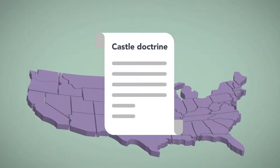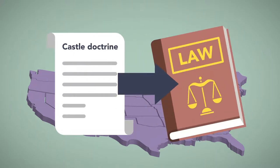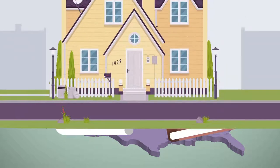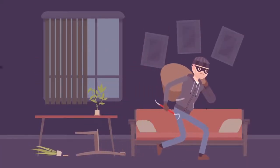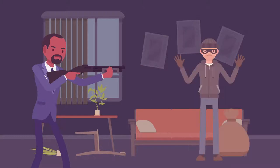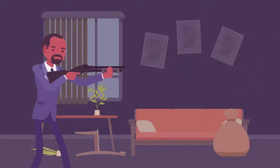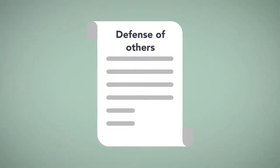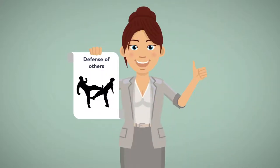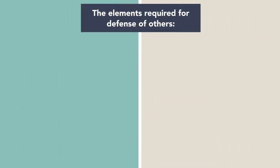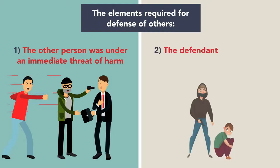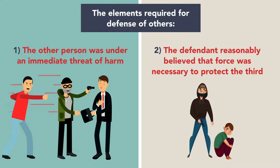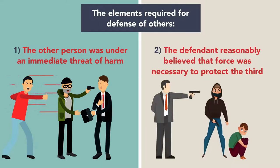Most states have incorporated the castle doctrine into law. Variations of the castle doctrine eliminate the duty to retreat from one's home before using deadly force, and or allow the use of deadly force against intruders, even when no deadly force is directly threatened by the intruder. Defense of others is generally available in situations comparable to those involving self-defense. The elements required for defense of others include: 1) the other person was under an immediate threat of harm, and 2) the defendant reasonably believed that force was necessary to protect the third person from the harm.